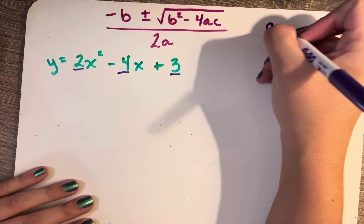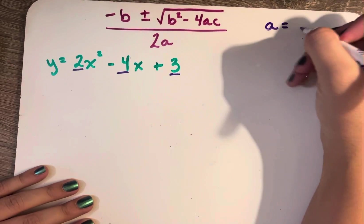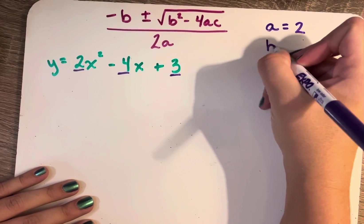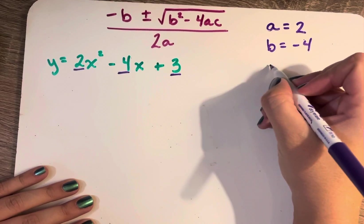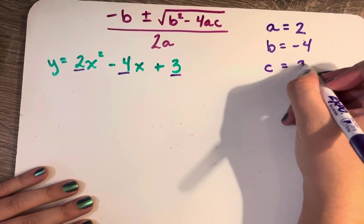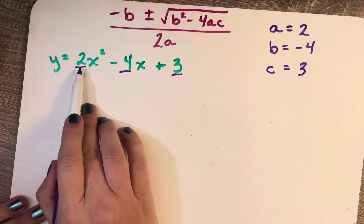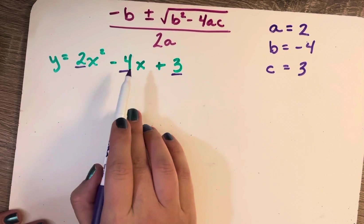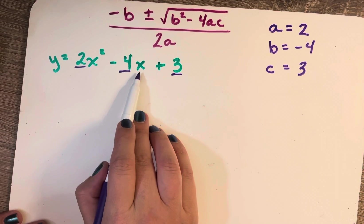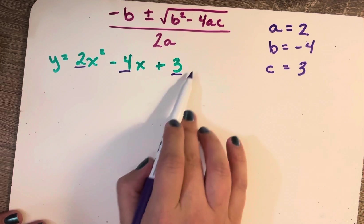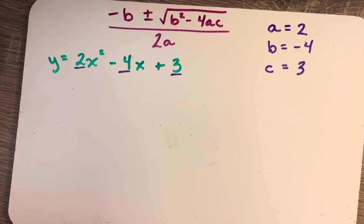I'm going to write what each thing is equal to over here. So a is equal to 2, b is equal to negative 4, and c is equal to 3. a is the coefficient of x squared, b is the coefficient of x to the first, and c is the constant or the final term in this function.